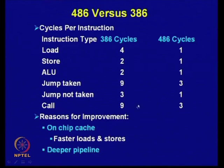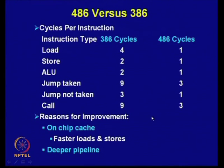Subroutine calls require 9 cycles in the 386 and 3 cycles in the 486. The main difference comes because of the on-chip cache used in the 486 — the 386 had no on-chip cache memory, but in the 486 small on-chip cache memories were provided, leading to this improvement: faster loads and stores. The five-stage pipeline used in 486 is another reason for improvement.